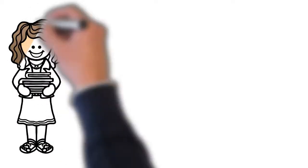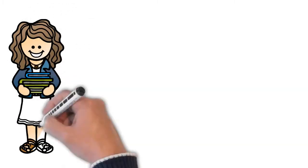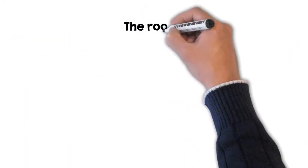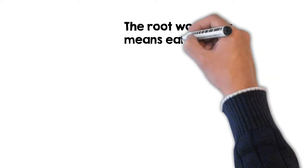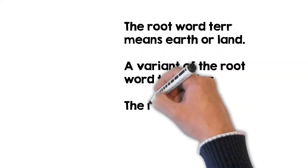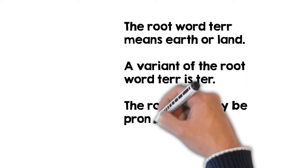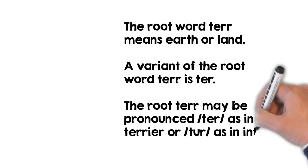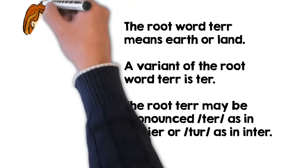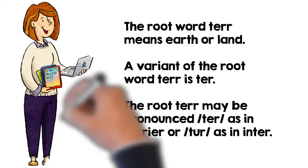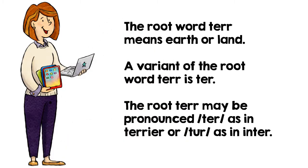In this video you're going to learn about the root word T-E-R-R. The root word T-E-R-R means earth or land. A variant of the root word T-E-R-R is T-E-R, and it may be pronounced 'ter' as in terrier, or 'ter' as in enter.